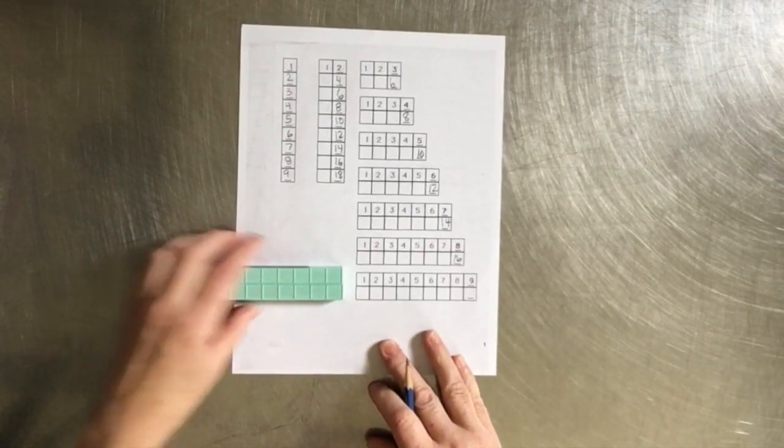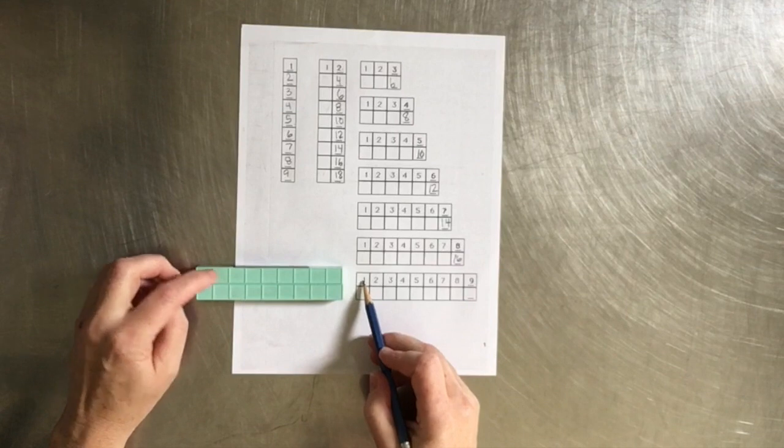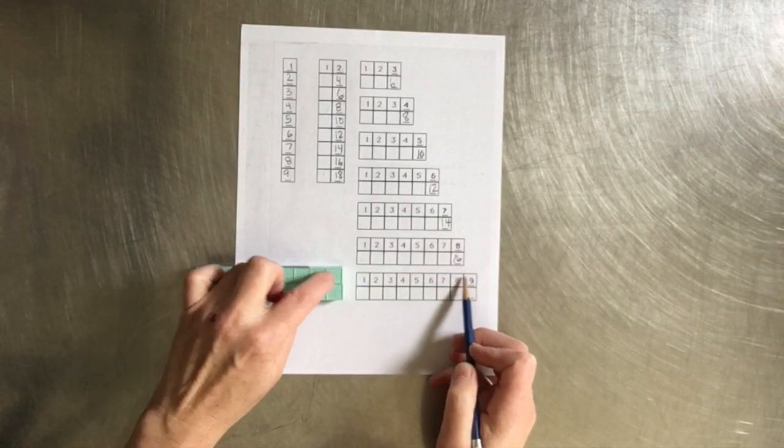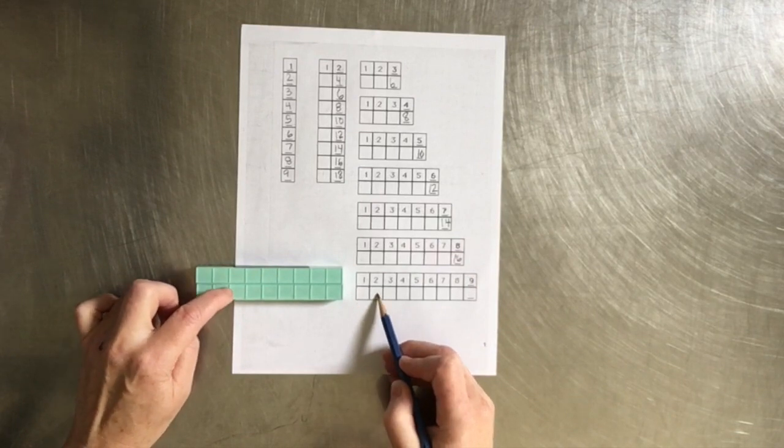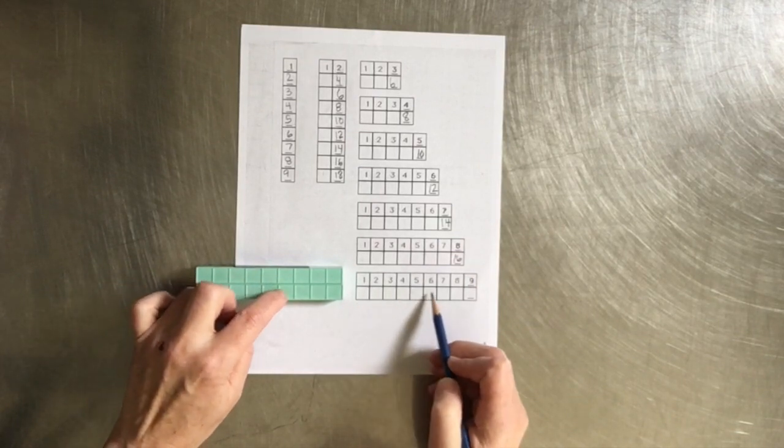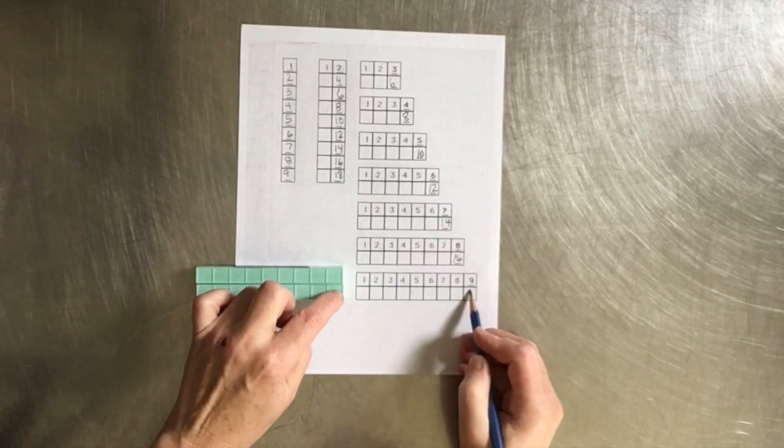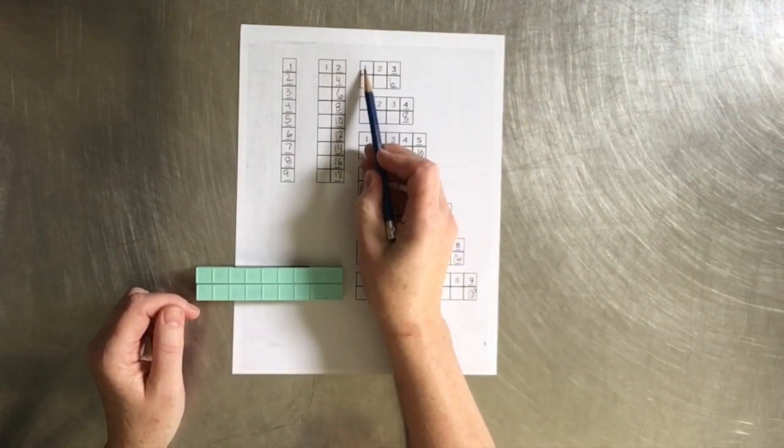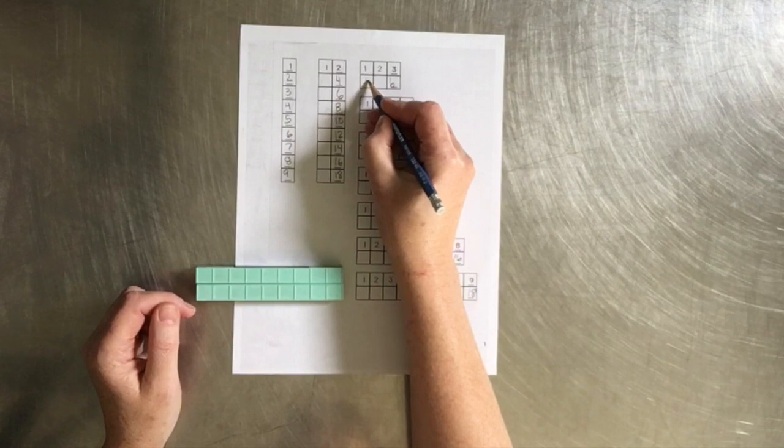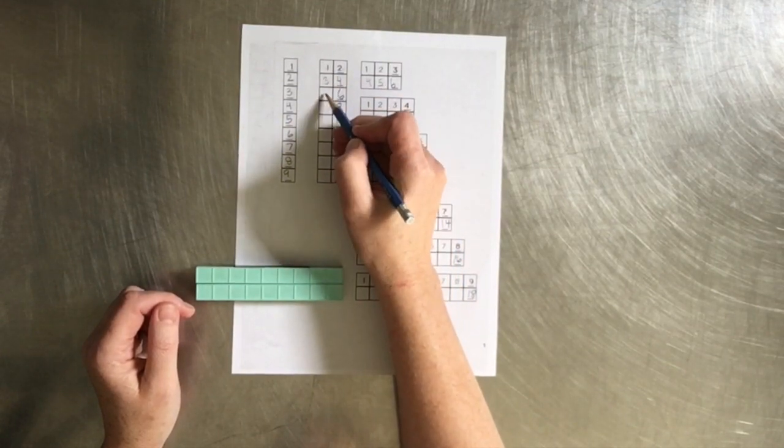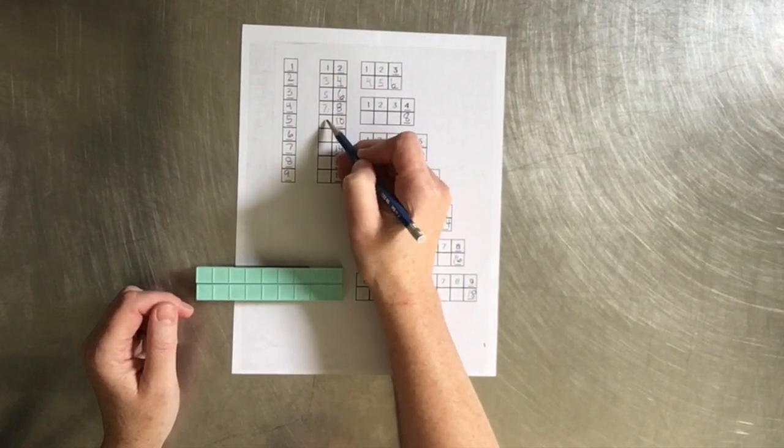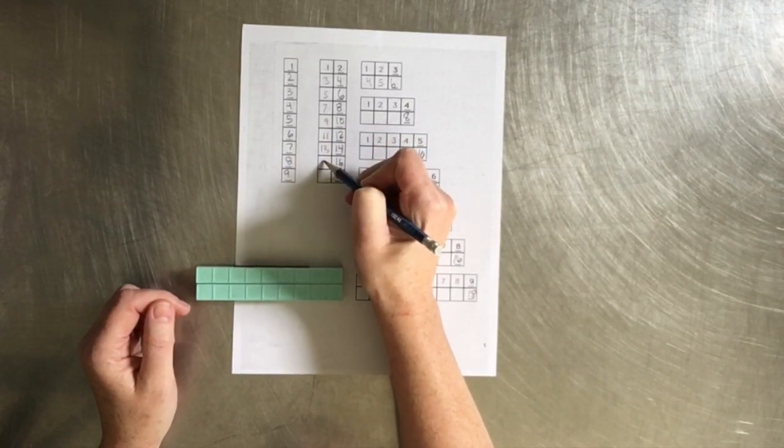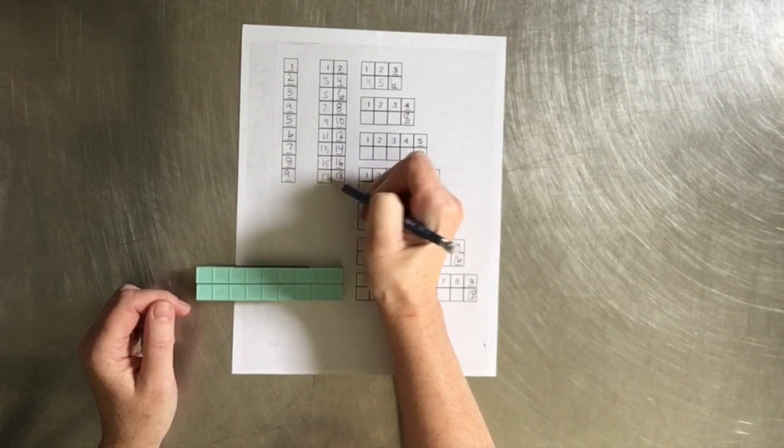And the last that we are counting are the 9's. 1, 2, 3, 4, 5, 6, 7, 8, 9, 10, 11, 12, 13, 14, 15, 16, 17, 18. And again, like I said, if you wanted, they could fill all of these in. 1, 2, 3, 4, 5, 6, 1, 2, 3, 4, 5, 6, 7, 8, 9, 10, 11, 12, 13, 14, 15, 16, 17, 18.